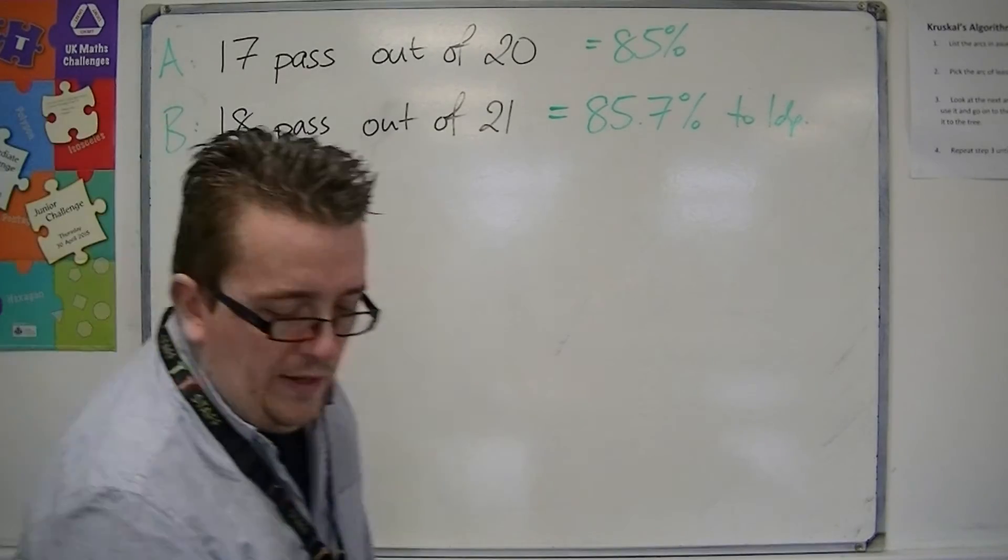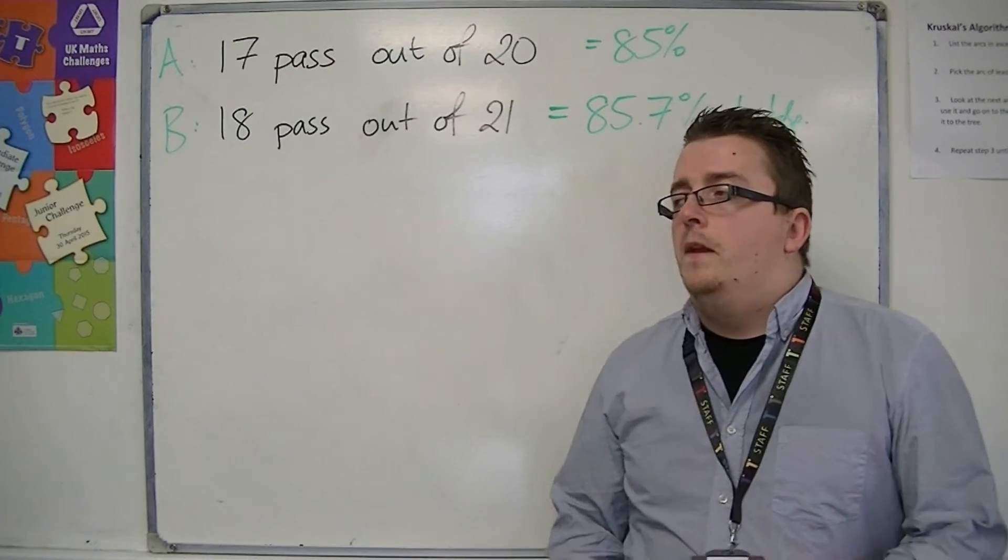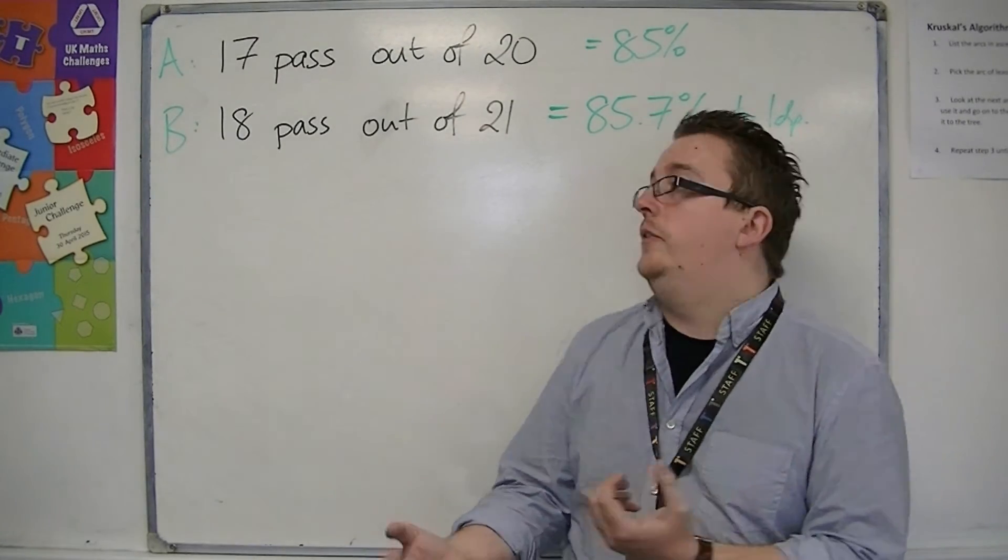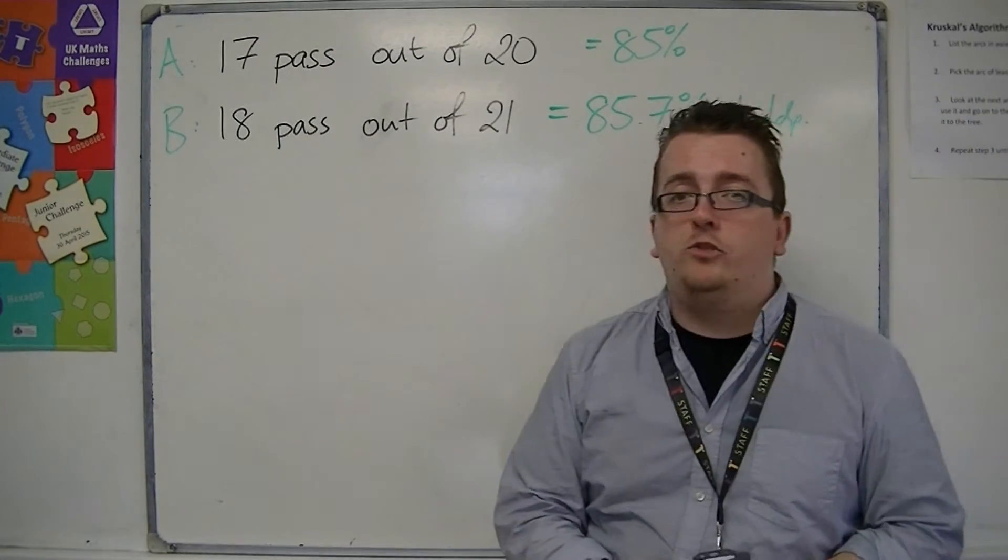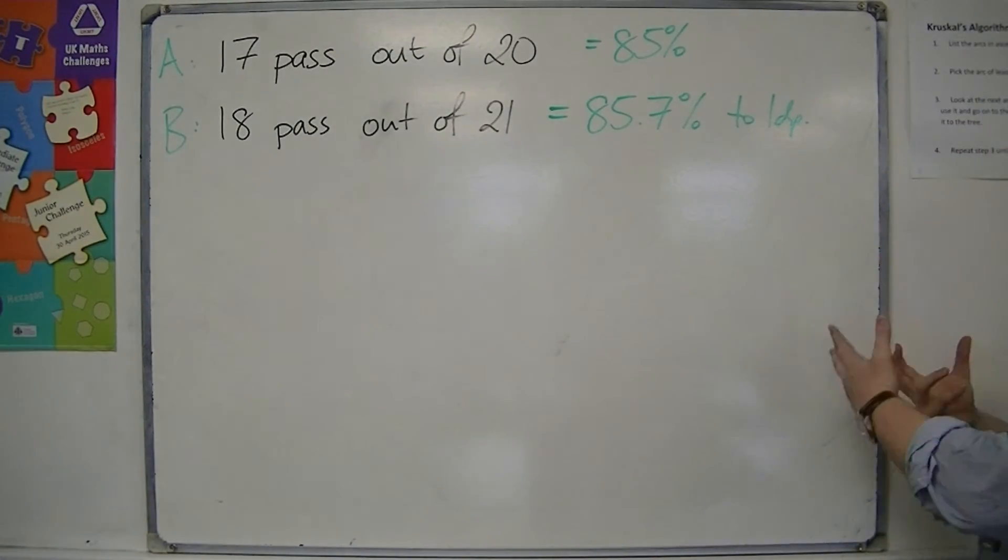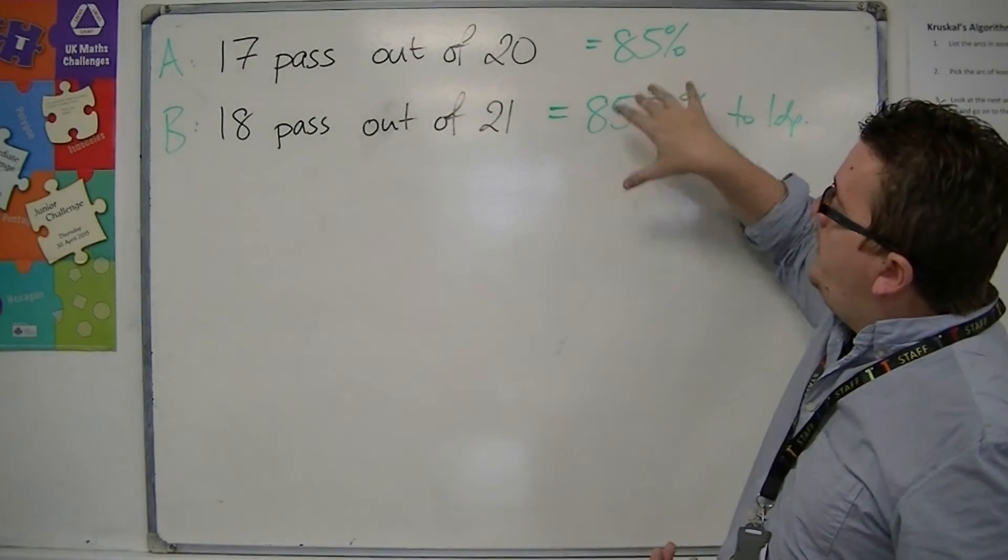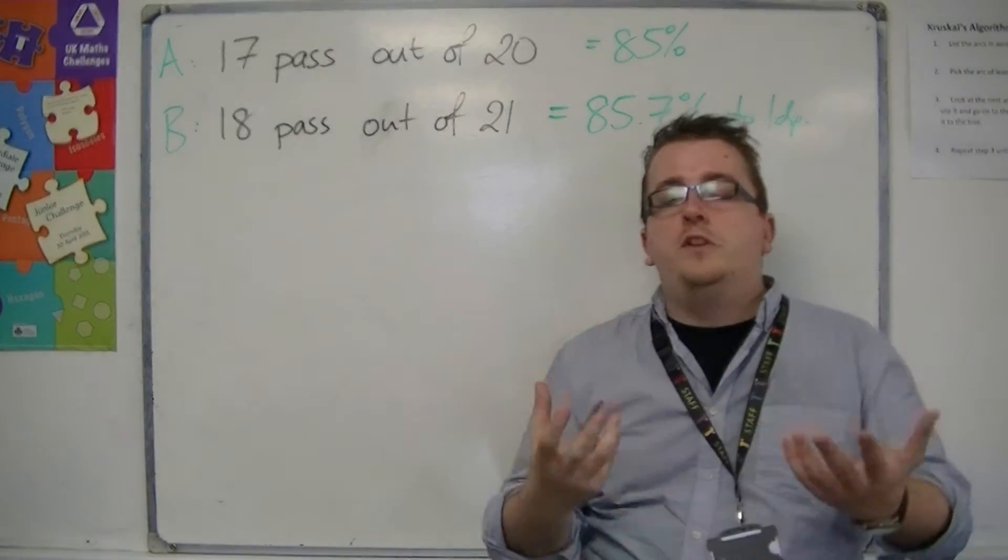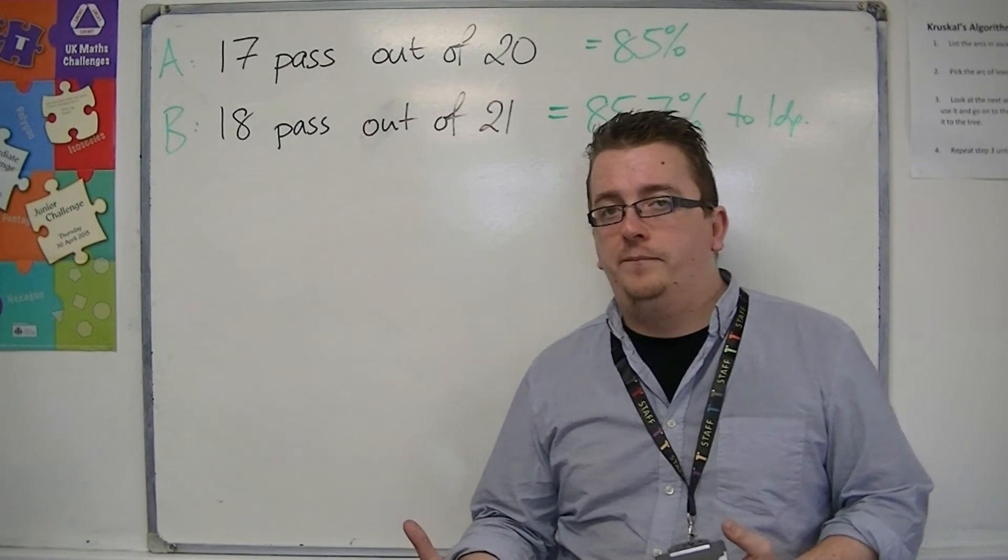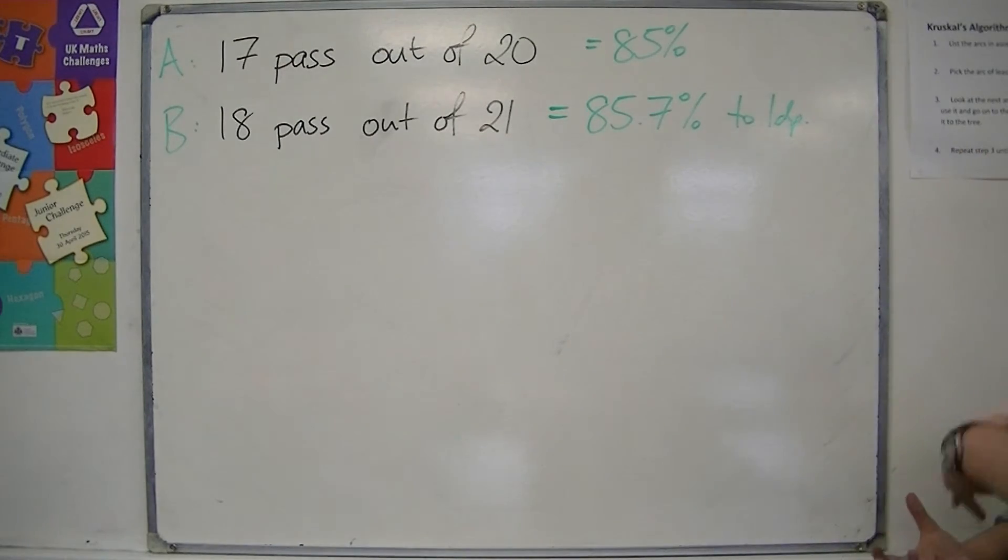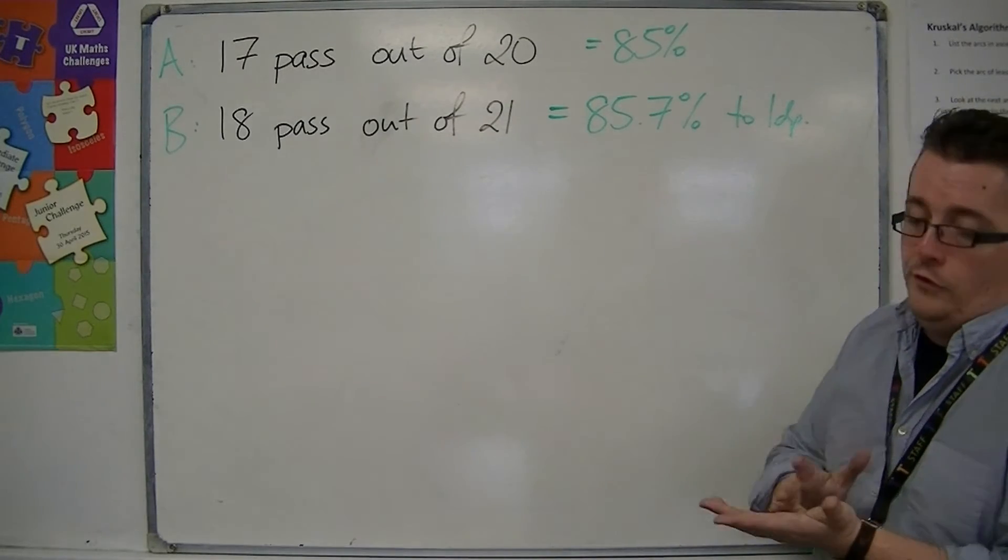So what this shows is that if you had two classes where the number of people in each class is different. So the first class had 20, the second class had 21. Then if you convert the achievement into a percentage, then you can compare how well one class did in comparison to the other. So it allows you to make this comparison, which is really what is very useful.